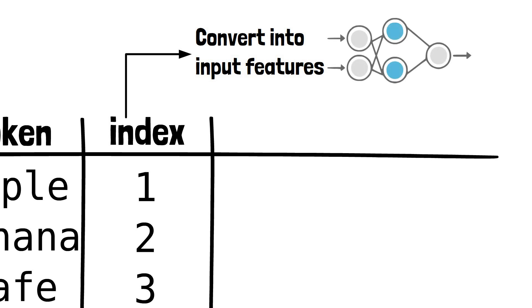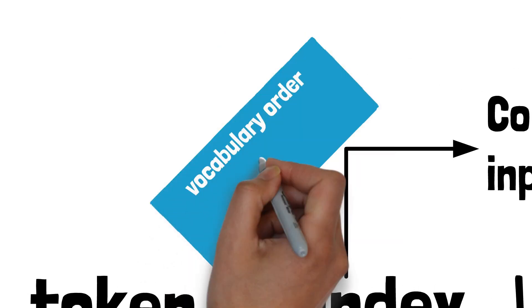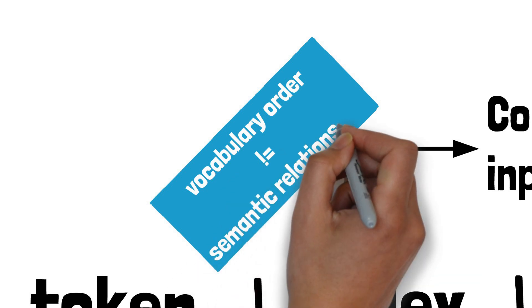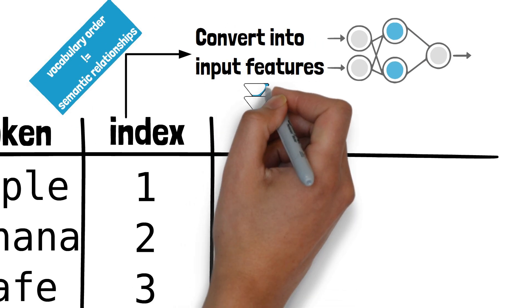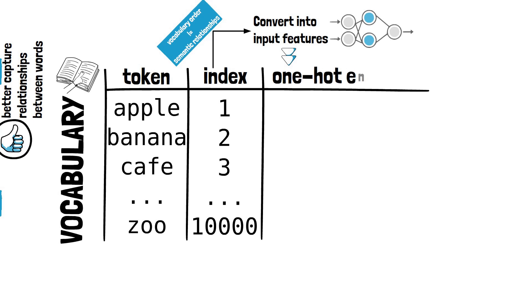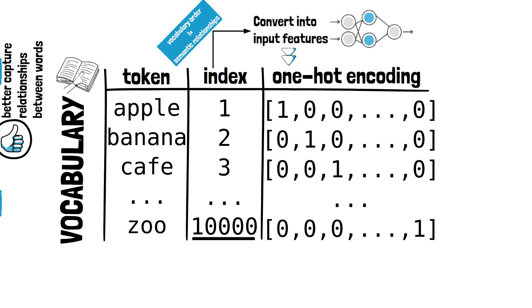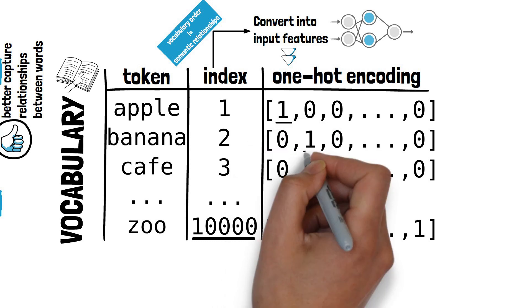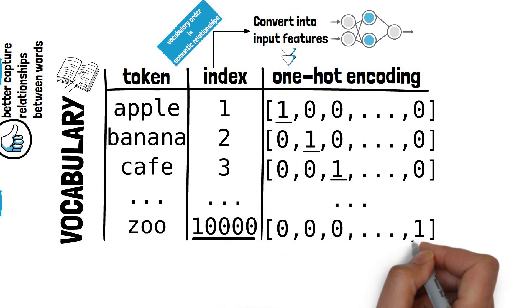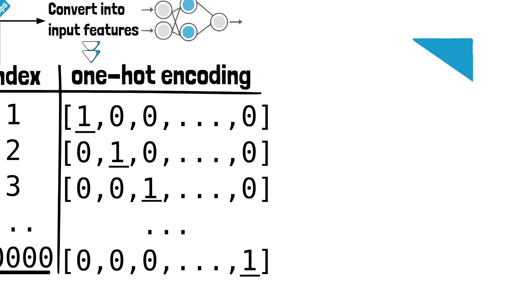These indices can be converted into input features in many ways. We would not want to feed them directly into the model as the vocabulary order doesn't capture any useful semantic relationship. Instead, we can one-hot encode the tokens. Imagine a vocabulary with 10,000 words. Each word would be represented by a vector with 10,000 elements, all would be zeros except the element corresponding to the index of the word in the vocabulary.